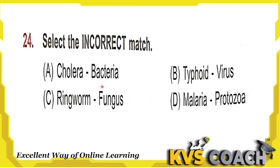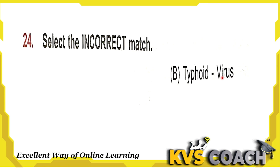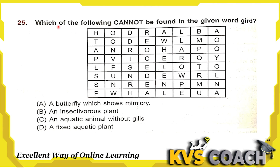Next question: select the incorrect match. Cholera — bacteria — correct. Typhoid — virus — no, this is wrong; typhoid is also caused by bacteria. Ringworm — caused by fungus — correct. Malaria — protozoa — correct. So the incorrect match is option B — typhoid from virus; it is caused by bacteria.